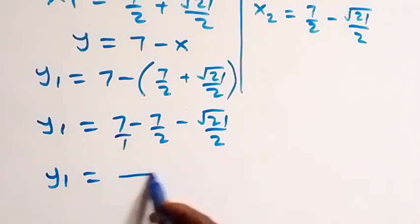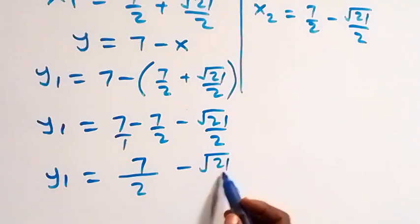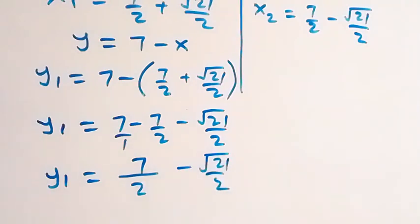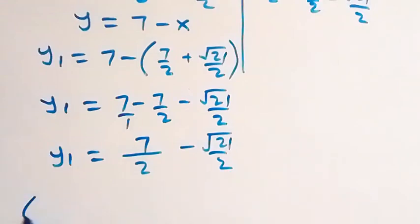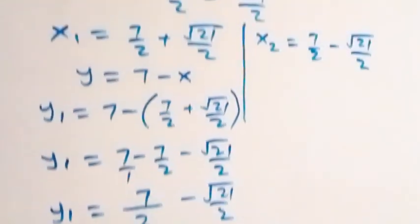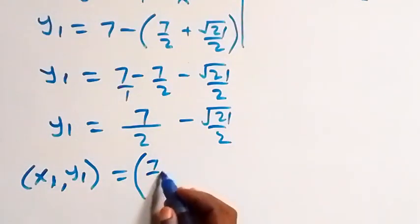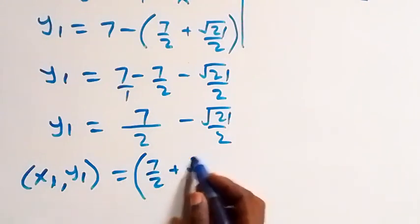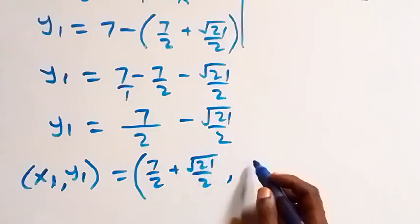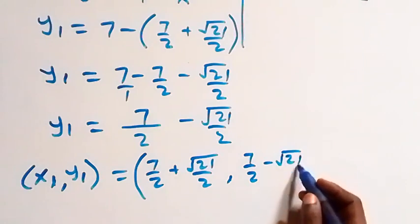The LCM is two, so we have fourteen over two minus seven over two minus root 21 over two. That gives y₁ equals seven over two minus root 21 over two.